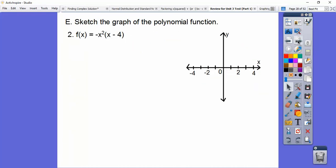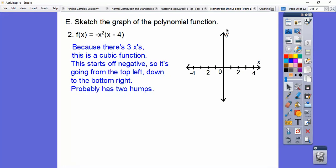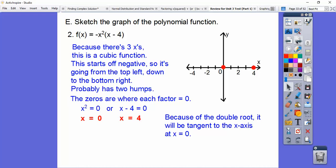This one here, there's 3 x's. So it's a cubic function. Cubic functions kind of go, they start up here and go down here, or they start over here and go like this. This is negative, so think of a negative slope of a line. It's going down in that direction. It's going from the top left up here down to the bottom right, and it probably has two humps right there. The zeros are when those factors equal zero. So there they are. And since this is a double root, it's going to be tangent to the x-axis right there. So it's coming up here, it's going to be tangent, and go, and then shoot off, and then come back down this way.